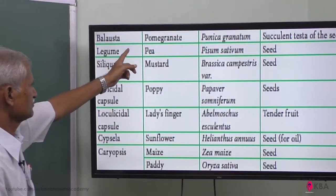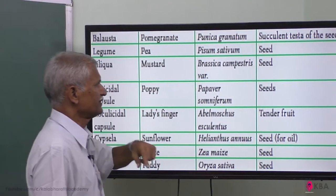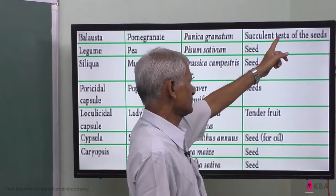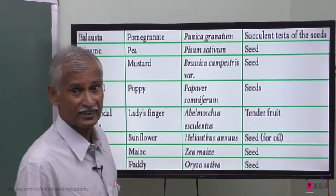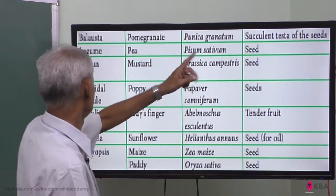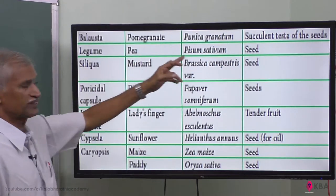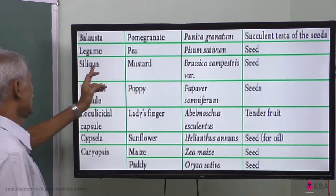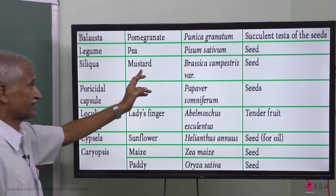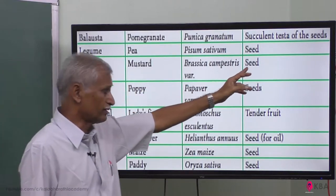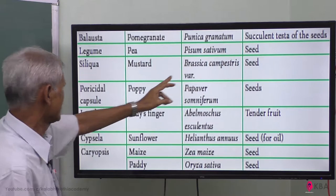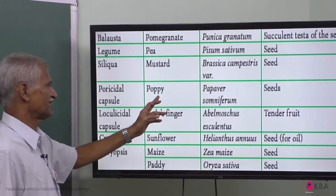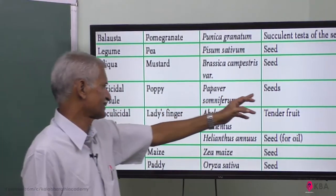Balusta — pomegranate — the succulent testa of the seeds is edible; the testa on top of the seeds is what we eat. For legume — pea — the seed is edible. For siliqua — mustard — the seed is edible. For loricidal capsule — poppy — the seeds are edible.